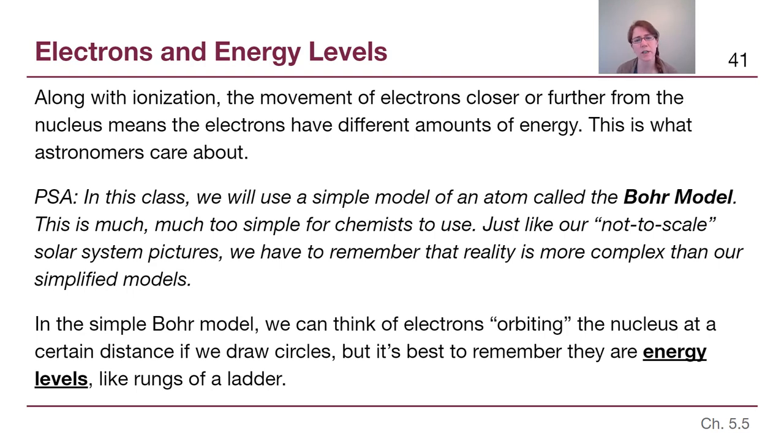So we can kind of think of the electrons as orbiting at a certain distance if we draw concentric circles, and the further away that quote unquote orbit is, the more energy it contains. But it is best to remember that the way that chemists tend to think about this, and the way that we'll also see briefly in our slides, is that we're talking about energy levels, where if we go further up a ladder, we have more energy, and if we are further down the ladder, we have less energy.